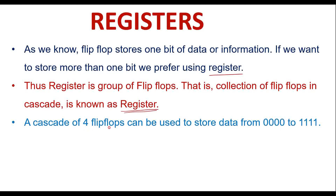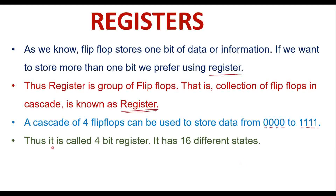A cascade of four flip-flops can be used to store data from 0000 to 1111. That is, if we connect four flip-flops in series, we can store four bits of data — right from 0000 to 1111. Thus, it is called a four-bit register. It has 16 different states, because from 0000 to 1111 we can get 16 different states.